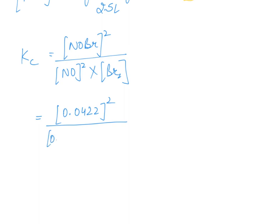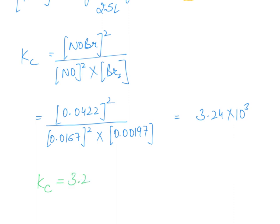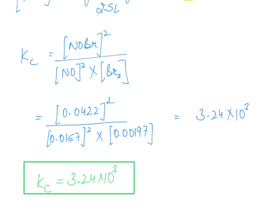This equals 3.24 multiplied by 10 raised to the power 3. So the final value for Kc of the reaction is 3.24 × 10³. I hope you understand the question and the video. Thank you.